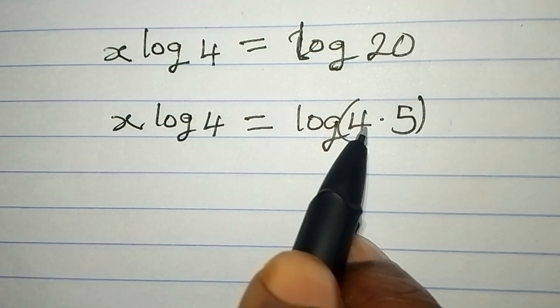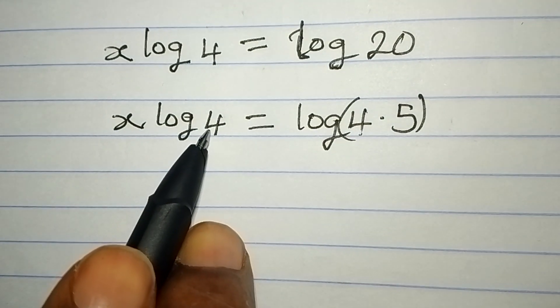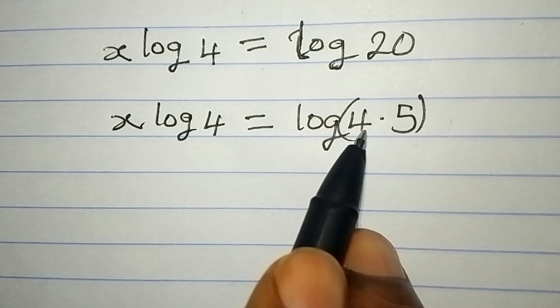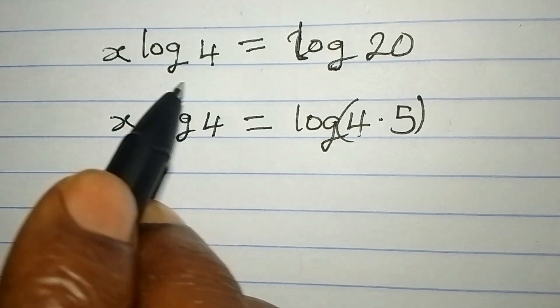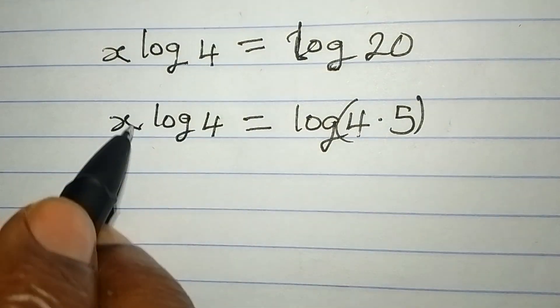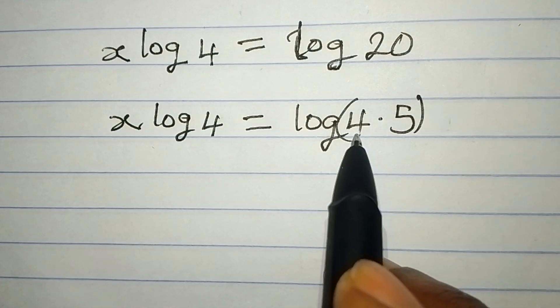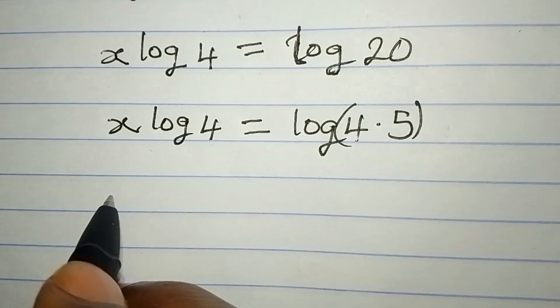I broke it into 2 this way because we have 4 here. So the 4 has to be there. I could have used 10 times 2 but there is no 2 here and there is no 10 on the left hand side. It has to be 4 times 5 since we have 4 over here.